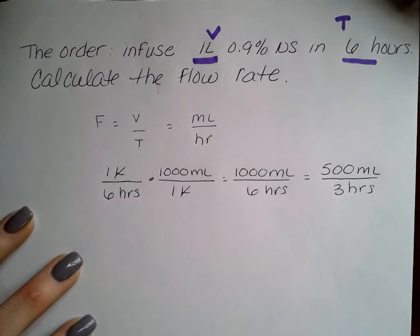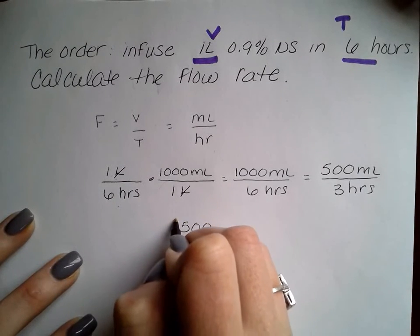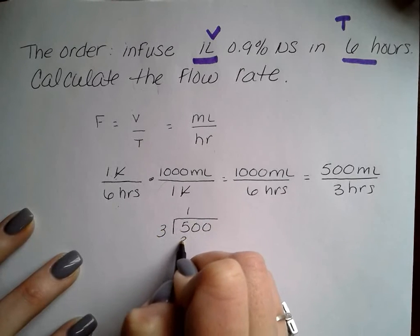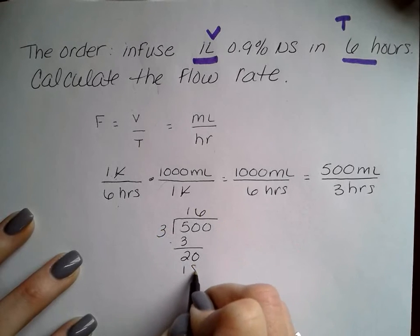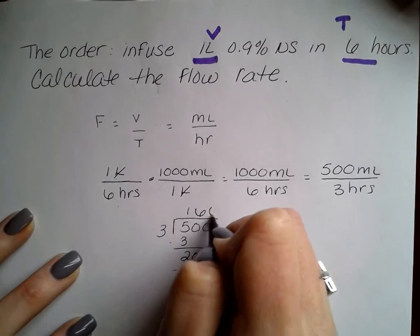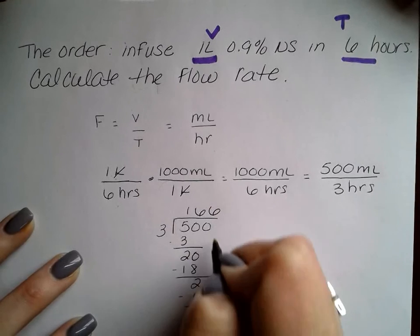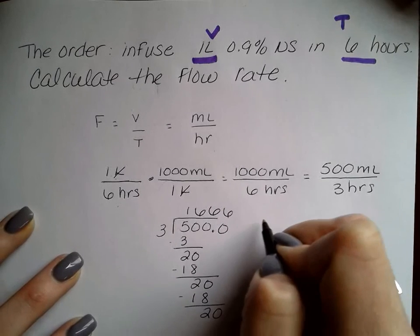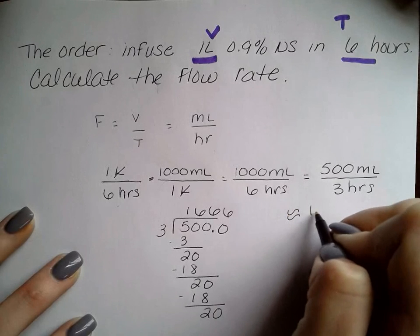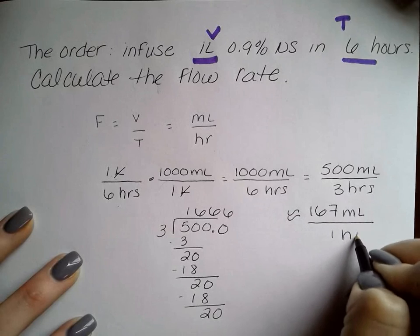We can then put it in your calculator or we can reduce from here. 500 divided by three, we see that it's just going to keep repeating. So our flow rate is approximately equal to 167 milliliters in one hour.